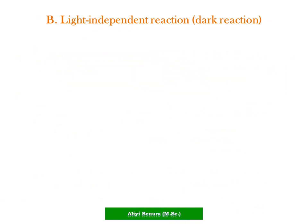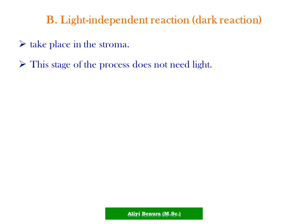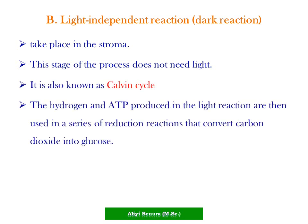The light-independent reaction, or dark reaction, takes place in the stroma of the chloroplast. This stage does not need light and is also known as the carbon cycle. The hydrogen and ATP produced in the light reaction are then used in a series of reactions that convert carbon dioxide into glucose, with hydrogen molecules combining with carbon dioxide to form glucose molecules and water.